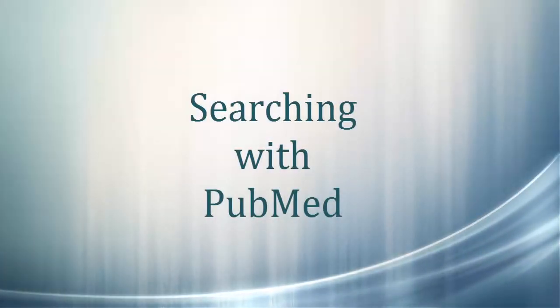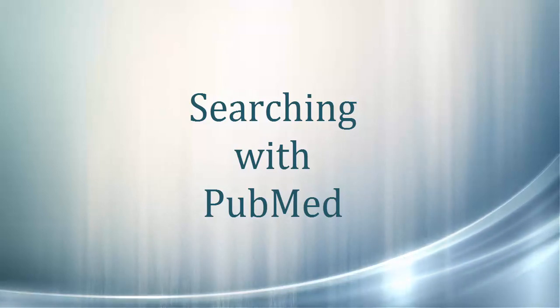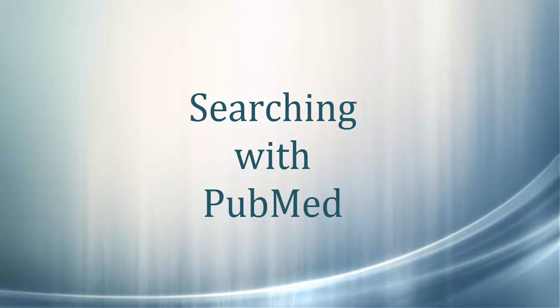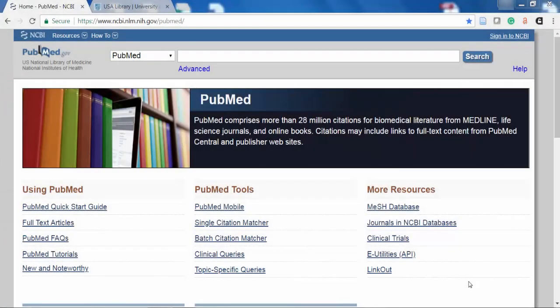This video will show you how to locate research articles using the PubMed database. PubMed is a subject database compiled by the National Library of Medicine that includes articles from journals on a wide range of medical topics. The database indexes over 28 million citations from biomedical literature and can be a very useful tool when locating published research.